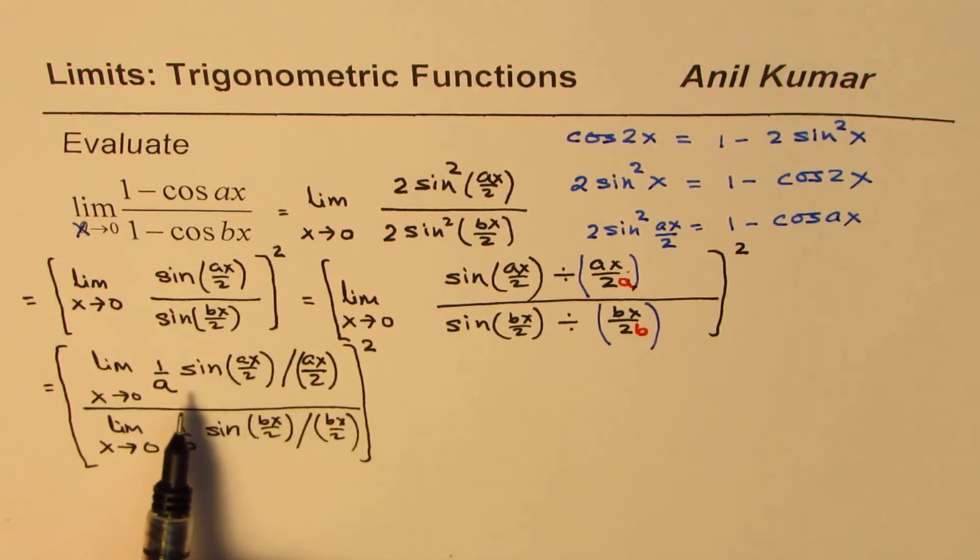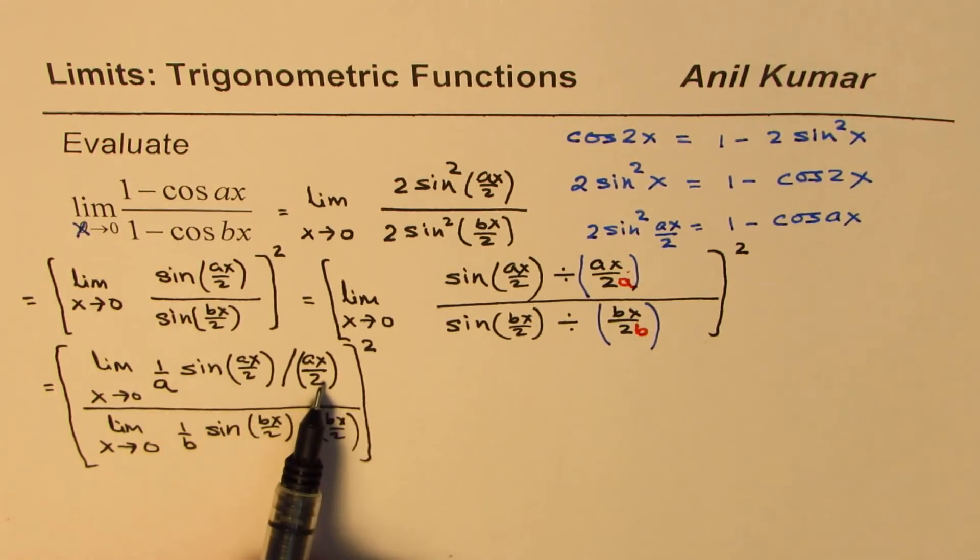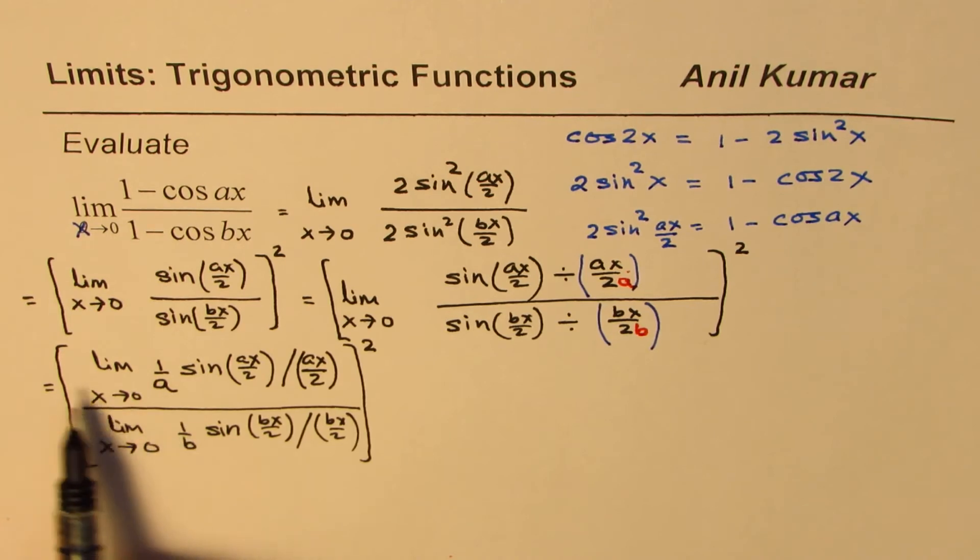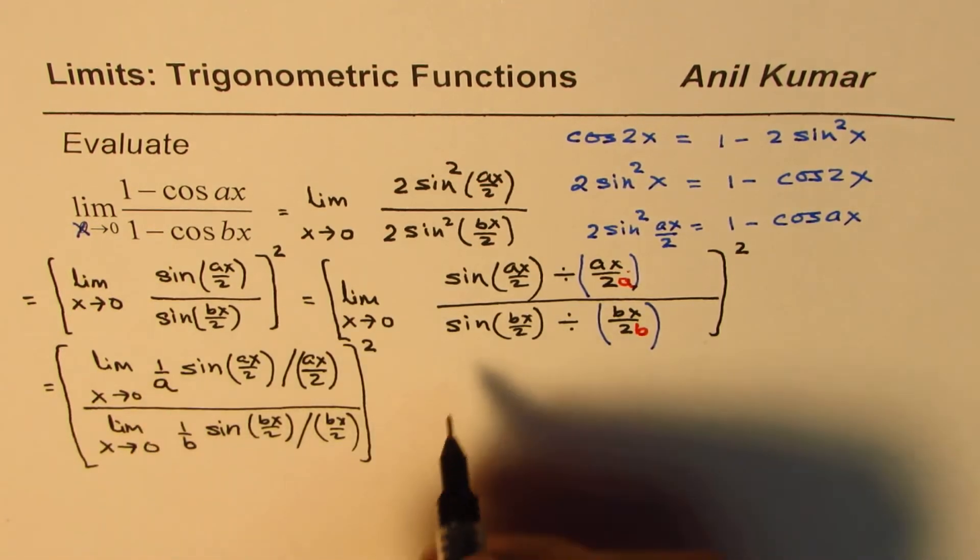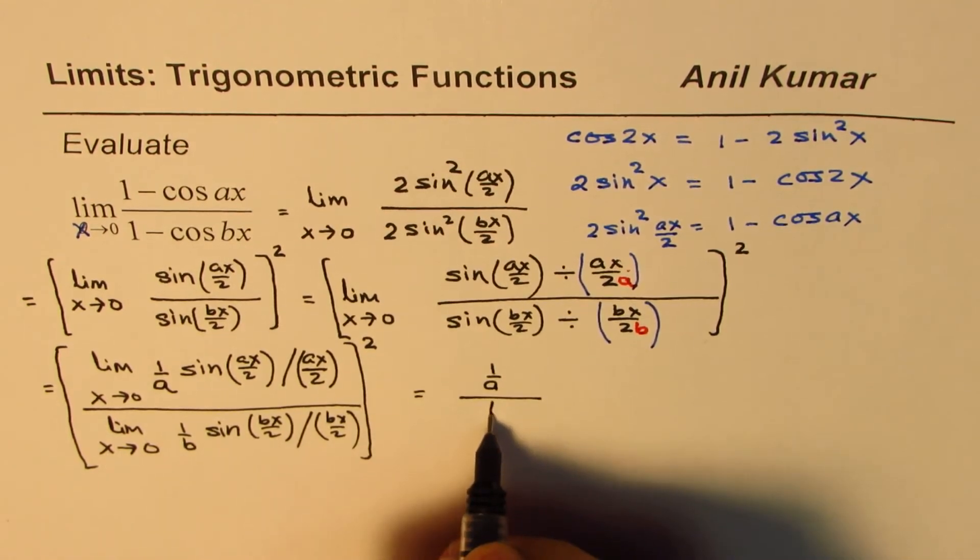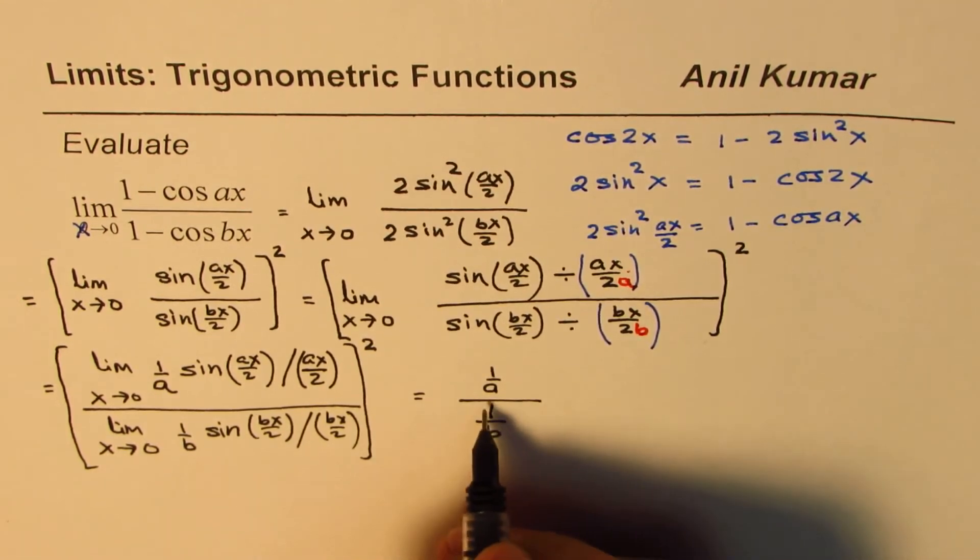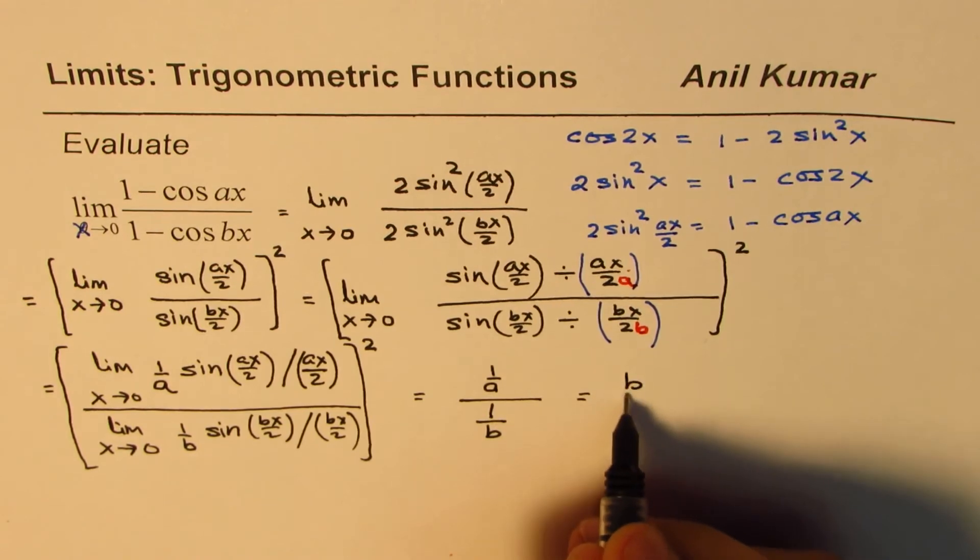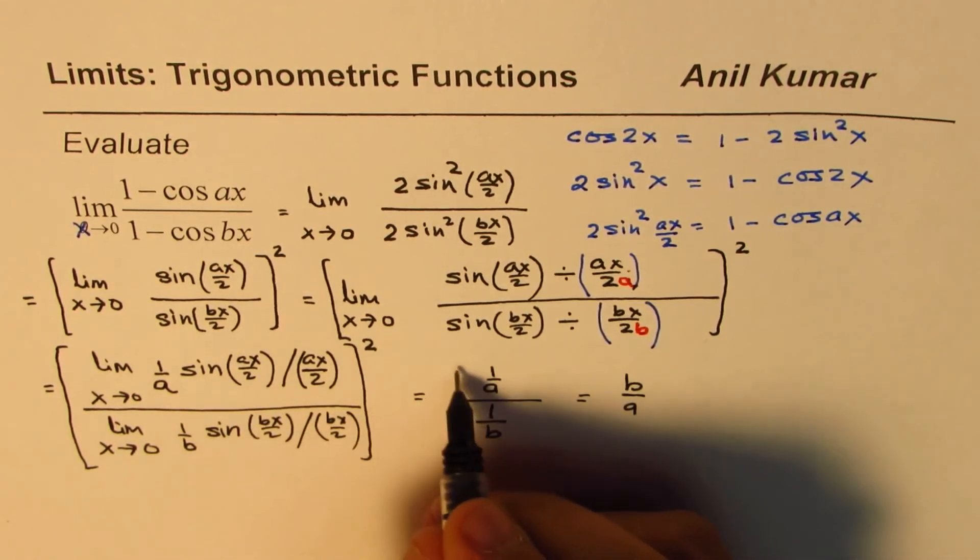Now the limit of this portion is 1, 1/a times 1, so we can write this as 1/a times 1/b. Or this is 1/a times 1/b, or it could be written as b/a. I'm sorry, this is whole square, so...